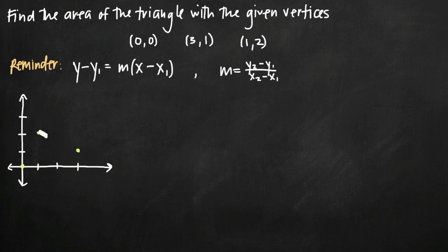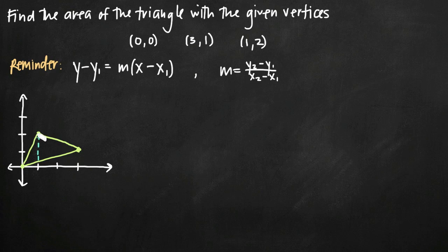Then we have a triangle formed by these three points. This is simply an area between curves problem, and I need to divide my triangle into two segments — divided at the line x=1. To the left of x=1, I subtract the lower line from the upper line. To the right of x=1, I subtract a different lower line from the upper line. So I need equations for each of these three lines.